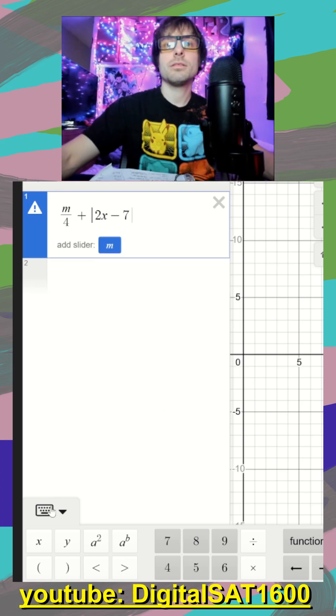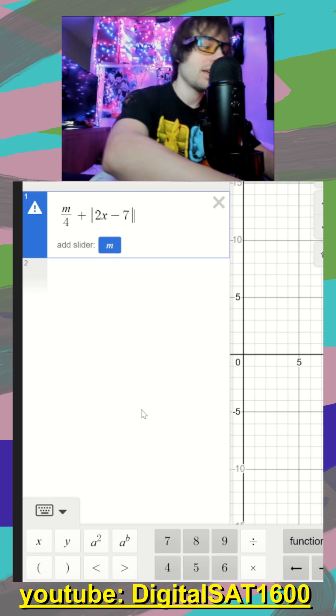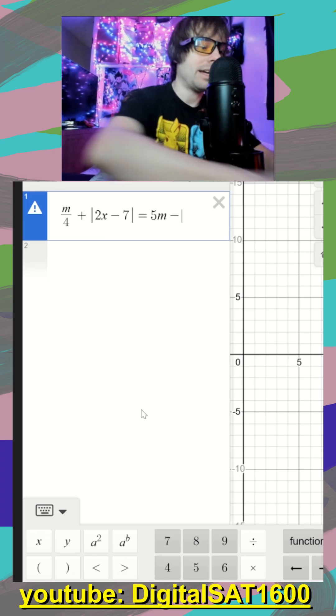m divided by four plus our absolute value bars in the keyboard at the bottom, 2x minus seven, finish my absolute value bars, equal to 5m minus six.